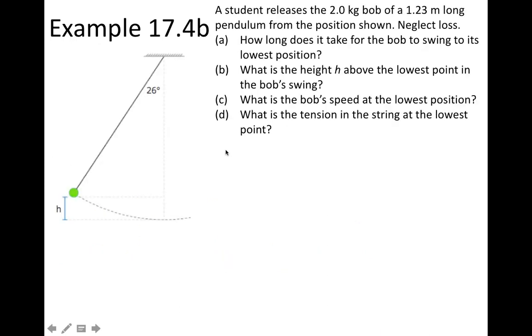And for our last example, here we have a student that is releasing a 2 kilogram bob from a 1.23 meter long pendulum from the position shown. And the question asks us to neglect loss. Part A wants us to find how long it takes for the bob to swing to its lowest position. Well, swinging from an end point to the lowest position, that is a quarter of a cycle. So the time that it will take will be a quarter of a period.